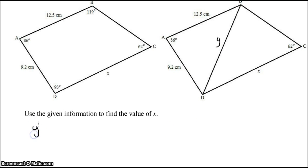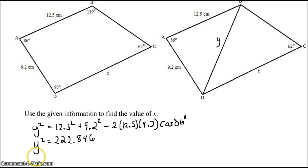Y squared will equal 12.5 squared plus 9.2 squared minus 2 times 12.5 times 9.2 cosine of 86 degrees. That gives us Y squared is 222.846. Can take the square root of both sides. And Y equals 14.99 centimeters.